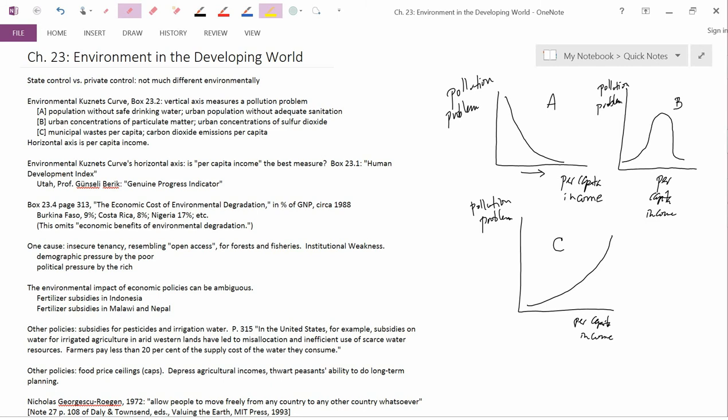Now, it's somewhat ironic that in countries that have a lot of peasants, a lot of people in agriculture, you tend to have food price ceilings, which, of course, depress agricultural incomes, and so you hurt the majority of the people who are in agriculture in order to benefit the minority who are in urban areas.